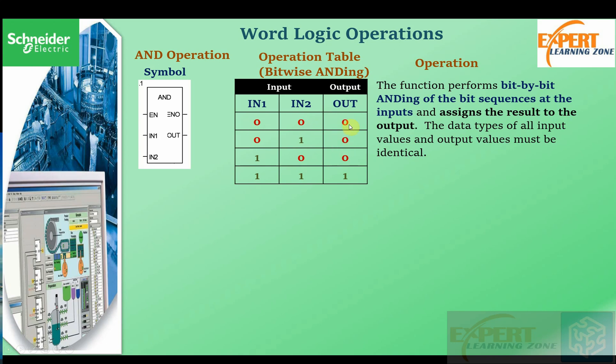So 0 AND 0 is 0, 0 AND 1 is 0, 1 AND 0 is 0, and 1 AND 1 is 1.